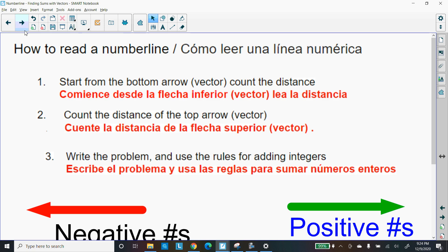So the first thing you need to know is how to read the number line. First thing you will do is start at the bottom arrow, which is called a vector, and count the distance. Step 2, count the distance of the top arrow vector. And the final step, write the problem, and use your rules for adding integers.